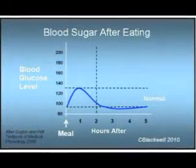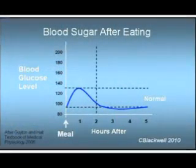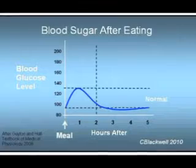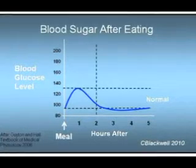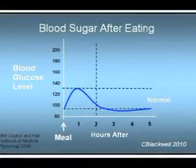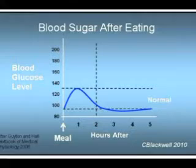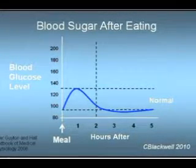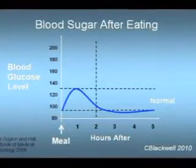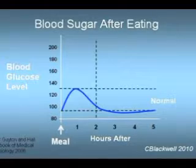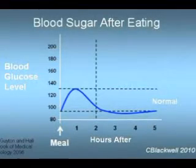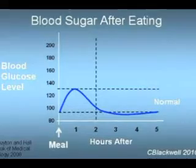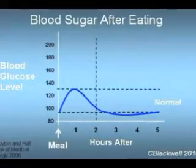To review how your body handles glucose, this slide shows how blood sugar behaves in a normal person after eating. We'll call the start of the graph as fasting, like in the morning before breakfast or between meals. A normal fasting blood sugar is around 90. After a meal, the blood sugar peaks at about an hour, and by two hours is back down near normal.